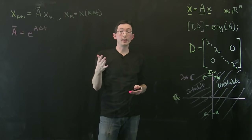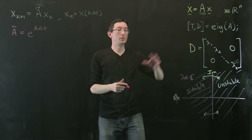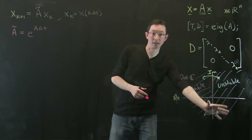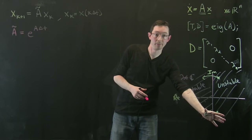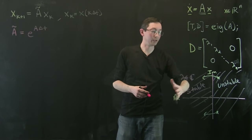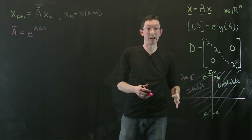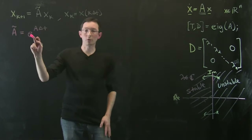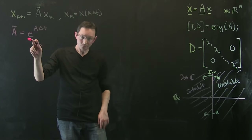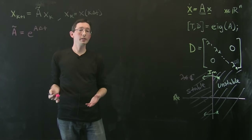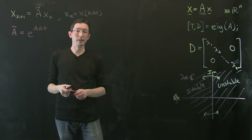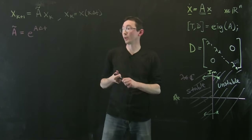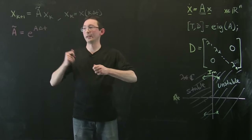There's a notion of stability in continuous time having to do with the real part of the eigenvalue. In discrete time there's also a notion of stability, but it's a little bit different — and that's what I want to walk through now.